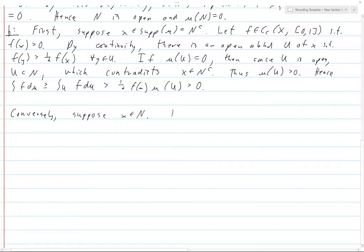Conversely, suppose X is in N. Then there must be, and then there is an open neighborhood. There is an open neighborhood U of X, whose measure is 0.